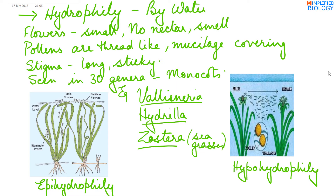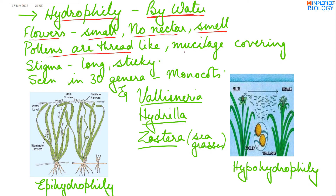The next abiotic agent is water — hydrophily, that is pollination by water. In this case, the flowers are small, with no nectar and no smell. Pollens are thread-like and have a mucilaginous covering which prevents water from entering the pollen. Stigmas are long and sticky. This type of pollination is seen in about 30 genera, mostly monocots. Examples are Vallisneria, Hydrilla, and Zostera, that is seagrasses.